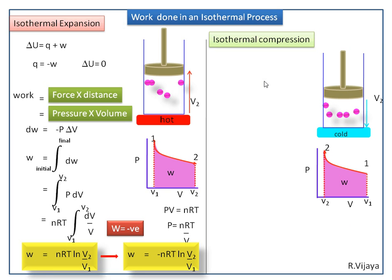According to the first law of thermodynamics, ΔU is equal to Q plus W. Since ΔU is equal to 0, minus Q is equal to W. The heat is released to the cold reservoir, denoted as minus Q. The work is done on the system, which carries a positive sign.